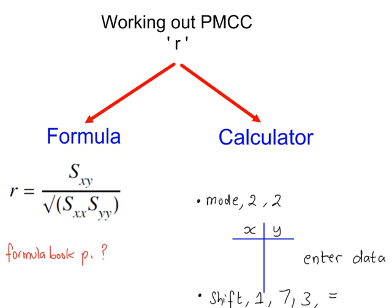In this flowchart, we see two separate methods for working out the PMCC. The easier one is the calculator, mode, statistics, that's option 2, and then y equals a plus bx, option 2, enter your x and y data, and then clear, press the AC key, shift, 1, 7 for regression analysis, and then it's option 3 for R, the PMCC. This is very easy.